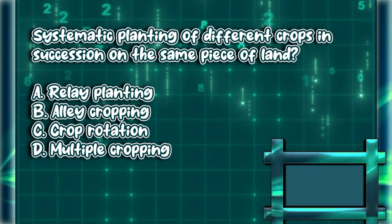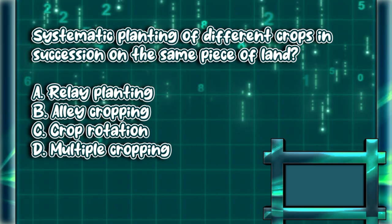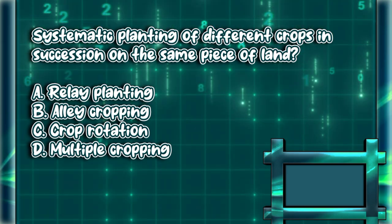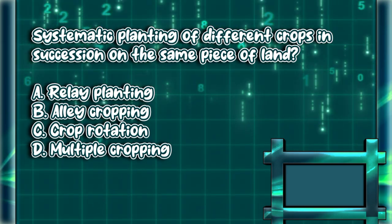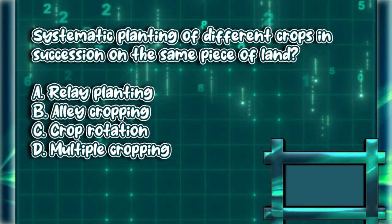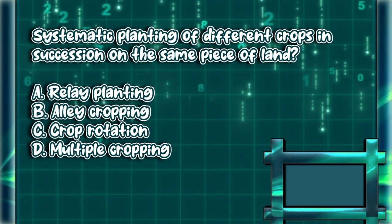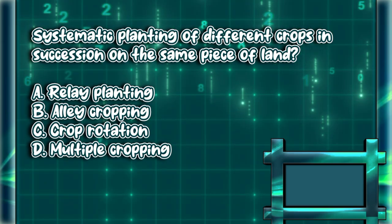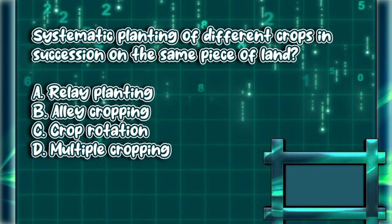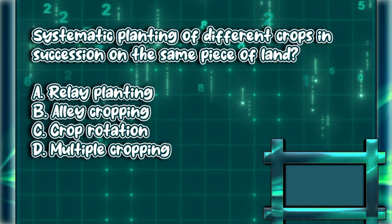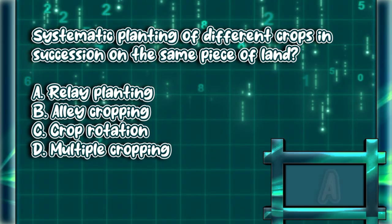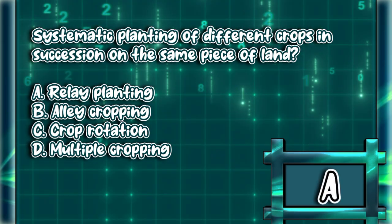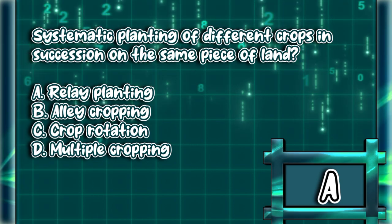Systematic planting of different crops in succession on the same piece of land: a) relay planting, b) alley cropping, c) crop rotation, d) multiple cropping. The answer is letter A.